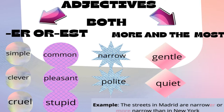These adjectives include: simple, common, narrow, gentle, pleasant, clever, cool, polite, quiet. For instance, you can hear: 'Streets in Madrid are narrower' or 'more narrow than in New York.'